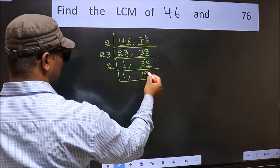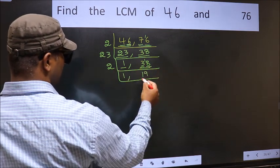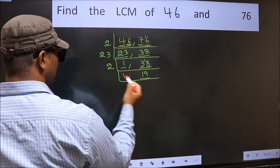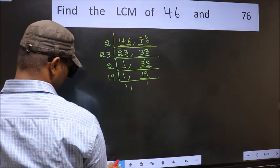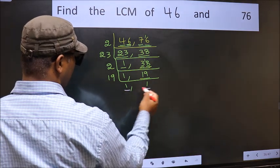When do we get 18 in 2 table? 2 times 9 is 18. Now here we have 19. 19 is a prime number. So 19 once 19. So we got 1 in both the places.